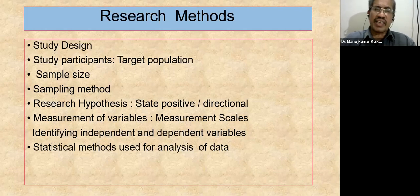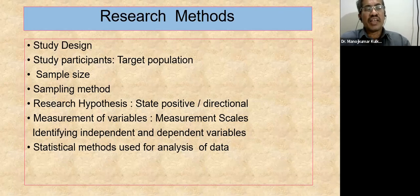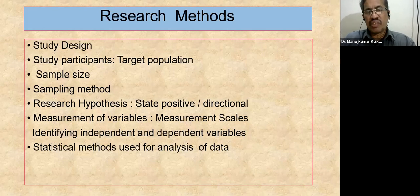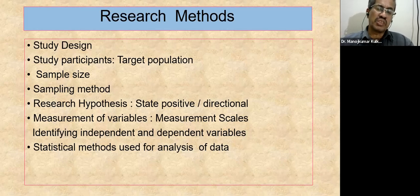If you are conducting an analytical or experimental study, state your research hypothesis — mainly it should be positive or direct, indicating there is a definite relationship. Don't state that there is no relationship between two factors. Then give attention to the different measurements you are making and the measurement scales — whether nominal, ordinal, ratio, or interval. If you are testing the hypothesis, identify your independent and dependent variables before starting data analysis.